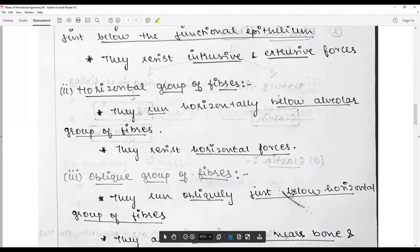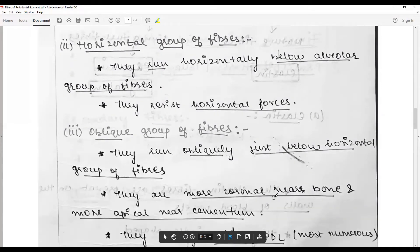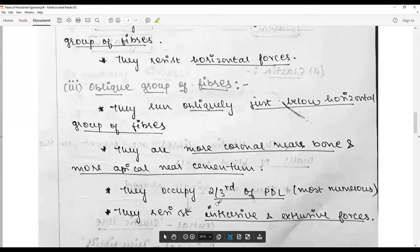Oblique group of fibers run obliquely just below the horizontal group. They are more coronal near the bone and more apical near the cementum. They occupy two-thirds of the PDL and are the most numerous, resisting intrusive and extrusive forces.